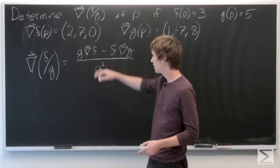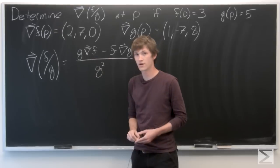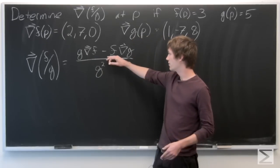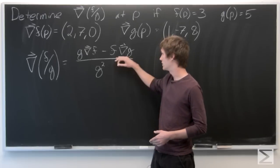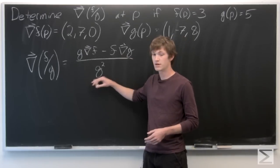And we're going to evaluate all of this at p. So this is going to be g of p times the gradient vector of f at p minus f of p times the gradient vector of g at p over g at p squared.